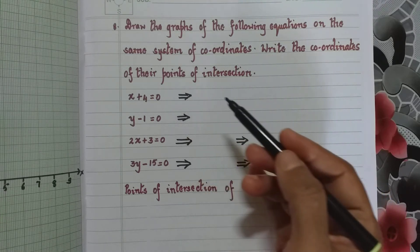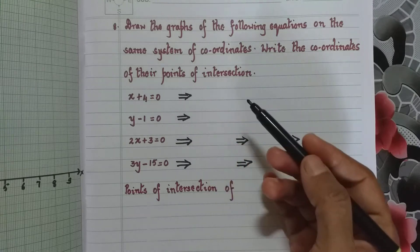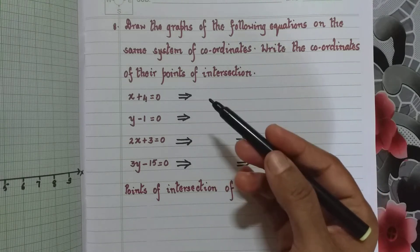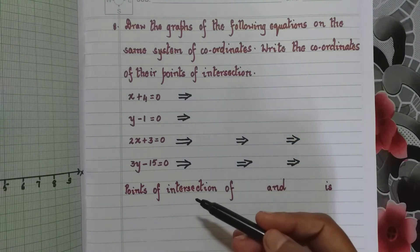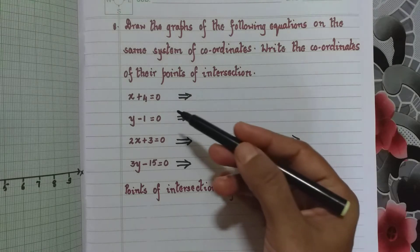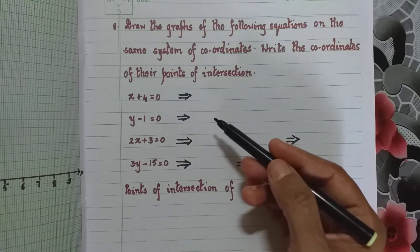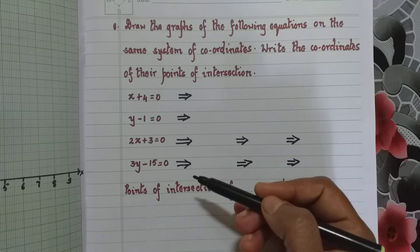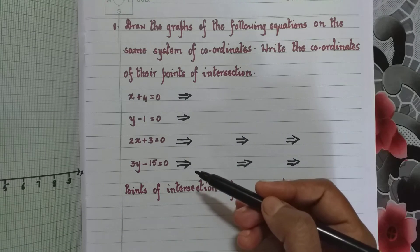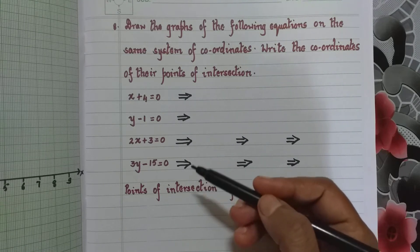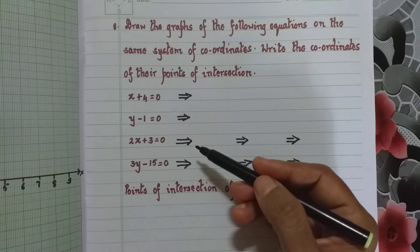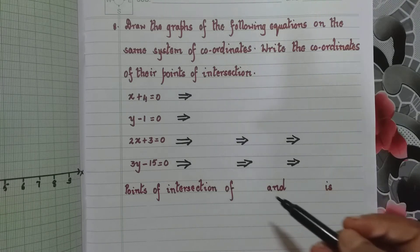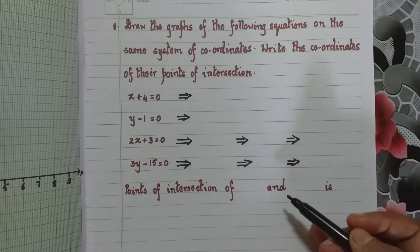If an equation is in the form x equal to a constant, we know it is a line parallel to the y-axis. And if it is in the form y equal to a constant, then it is parallel to the x-axis. So we draw those lines and then write the points of intersection of them.